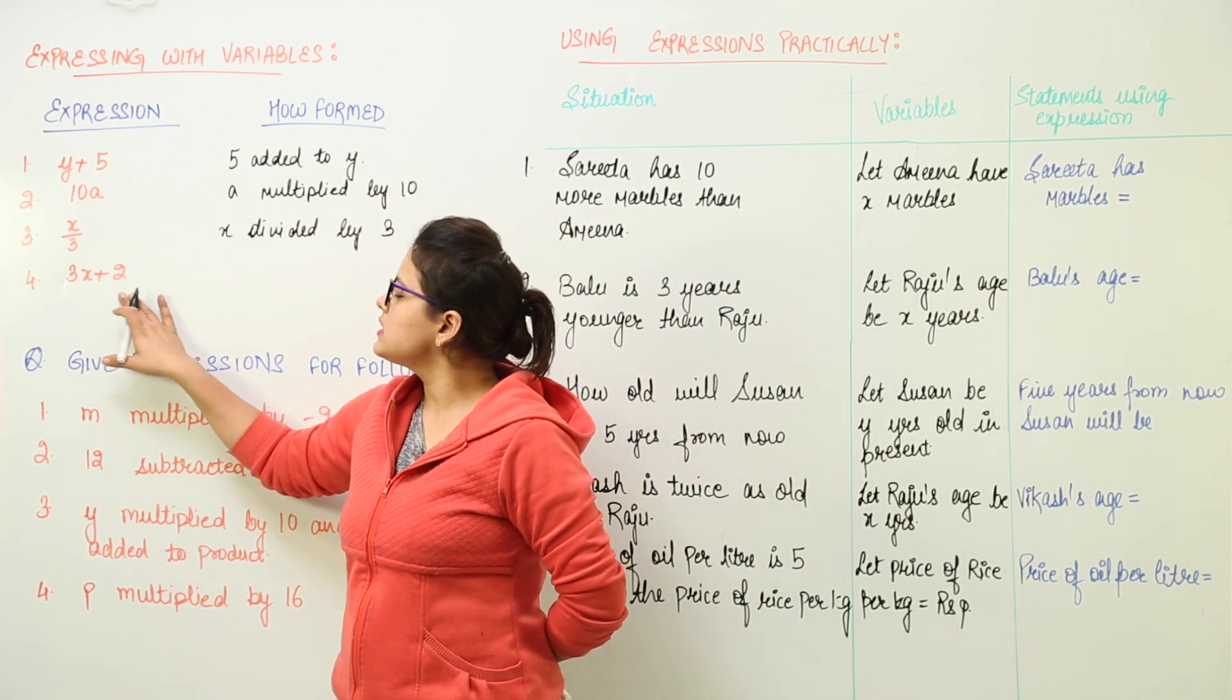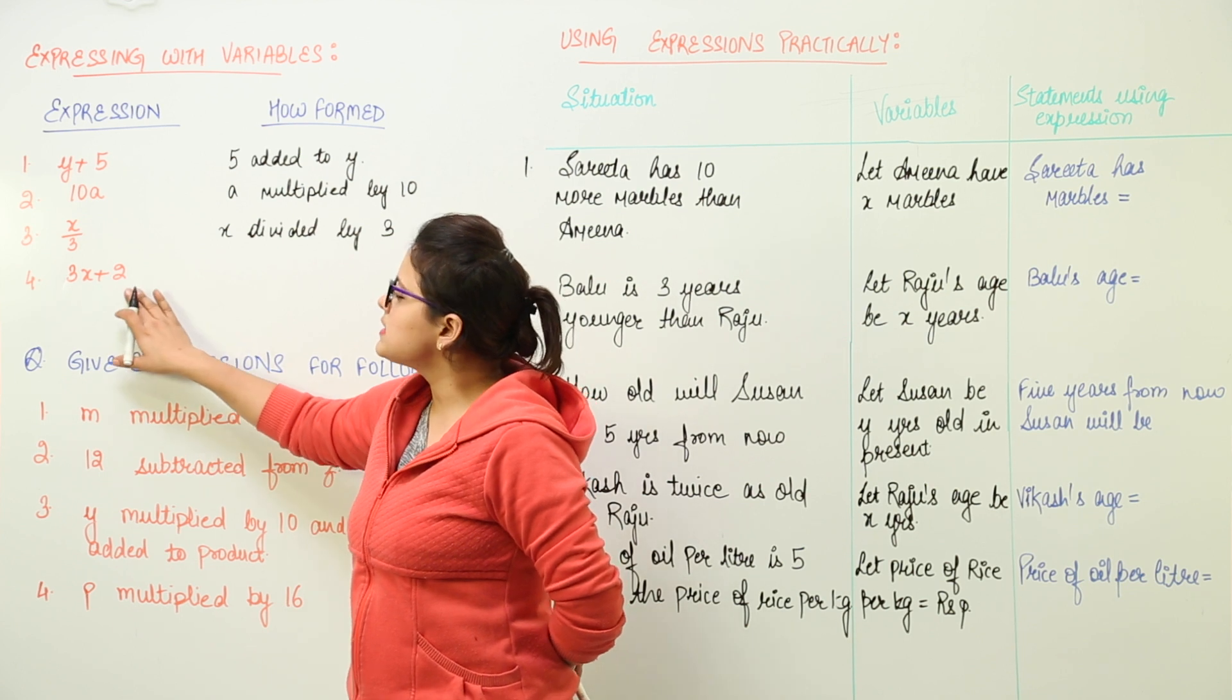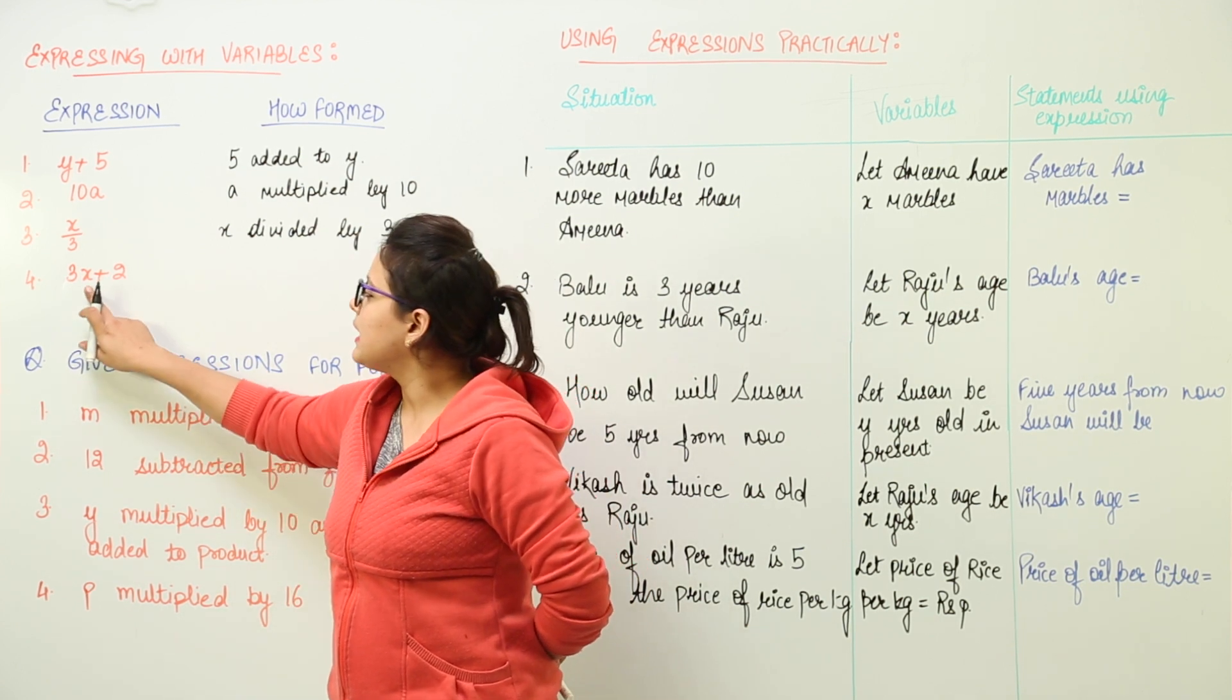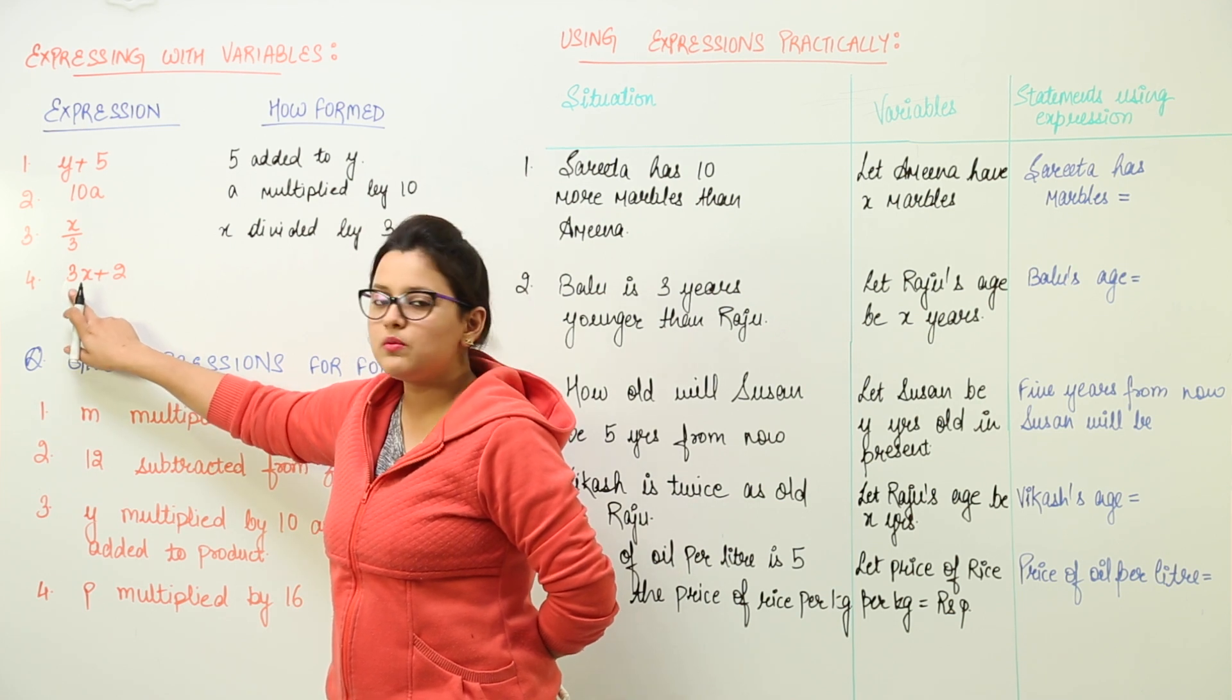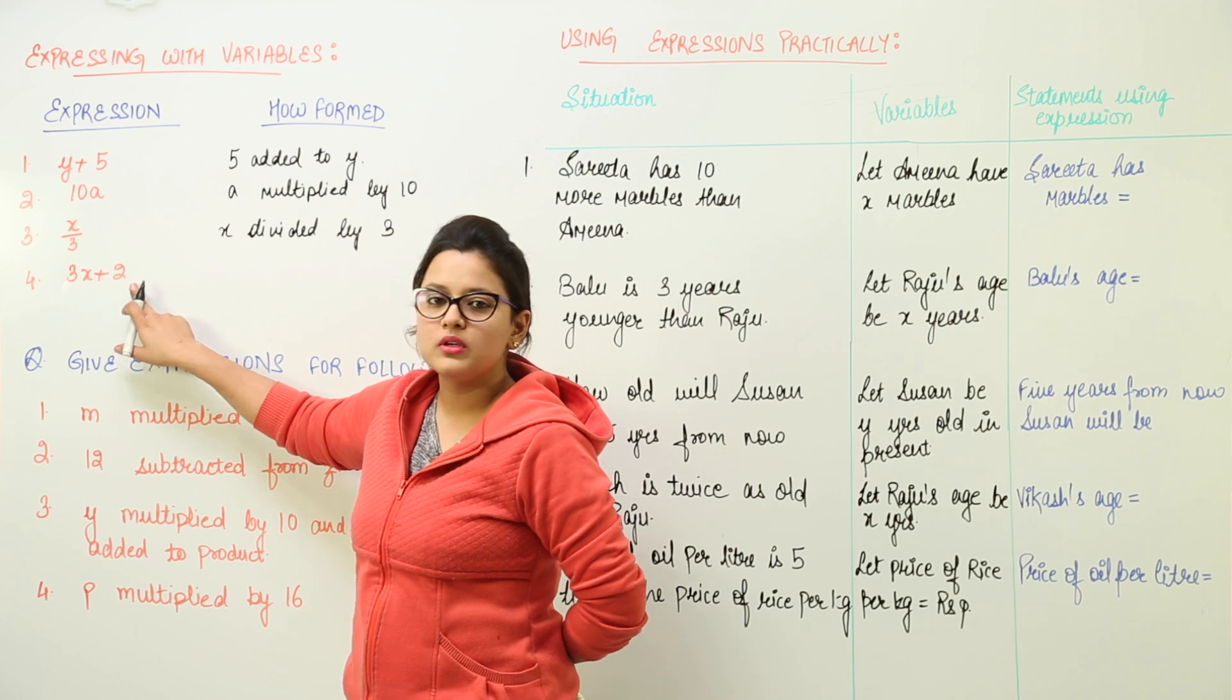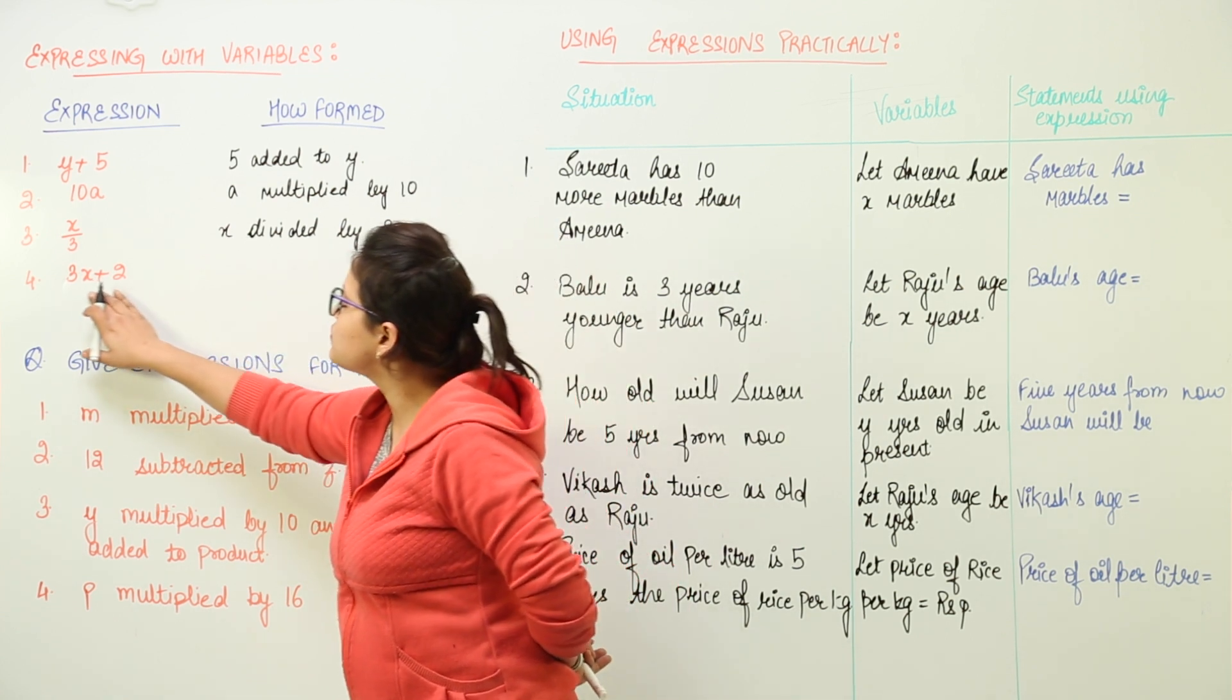Now another expression is 3x plus 2. This is formed when the first step would have been that the x variable was multiplied with 3 and to the product we would have added 2. Only then this would have been formed.